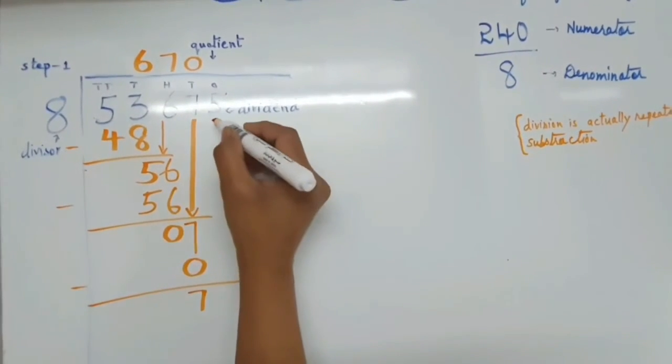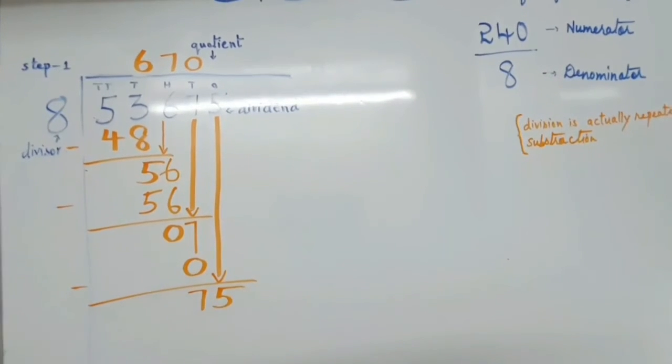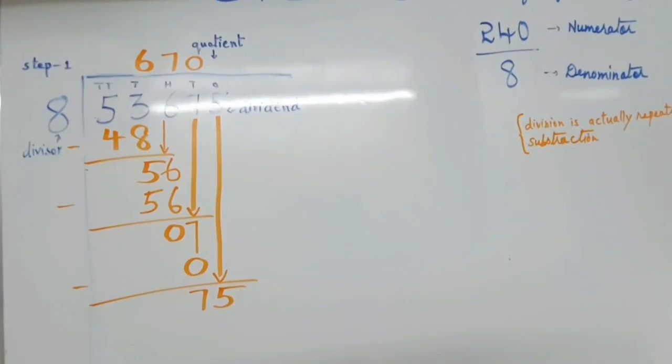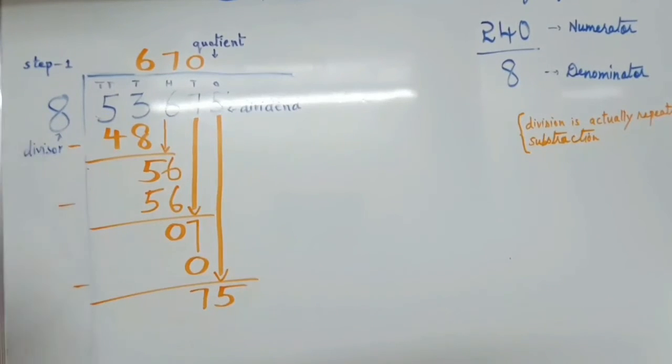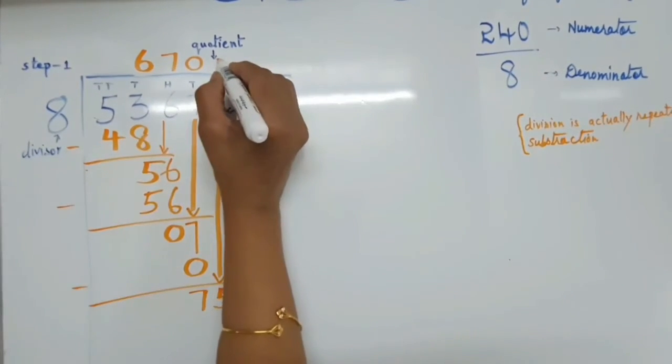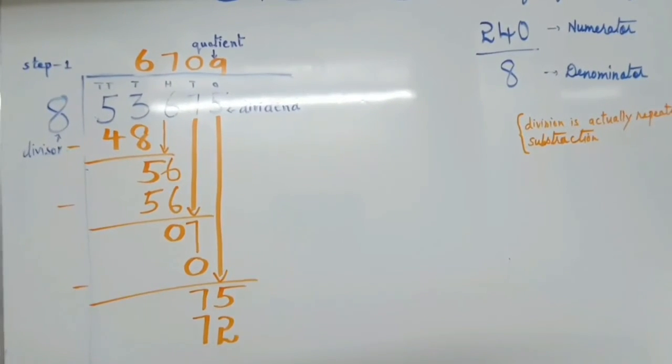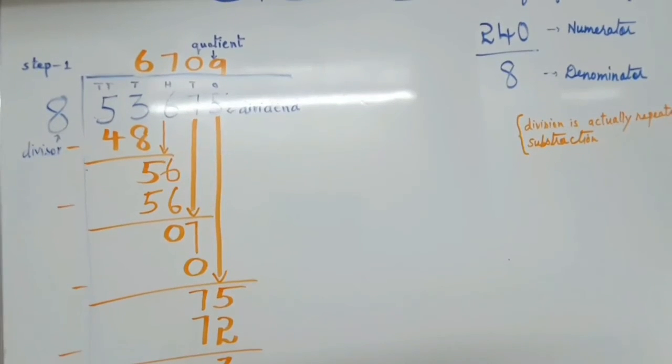Then what is our next digit? That is 5. We have to bring down our next digit, that is 5. So it becomes 75. Now we ask how many 8's will make 75. So we have to count 8 tables. That is 8 nines are 72. Now again we have to subtract. So 5 minus 2, that is 3, and 7 minus 7 is 0.